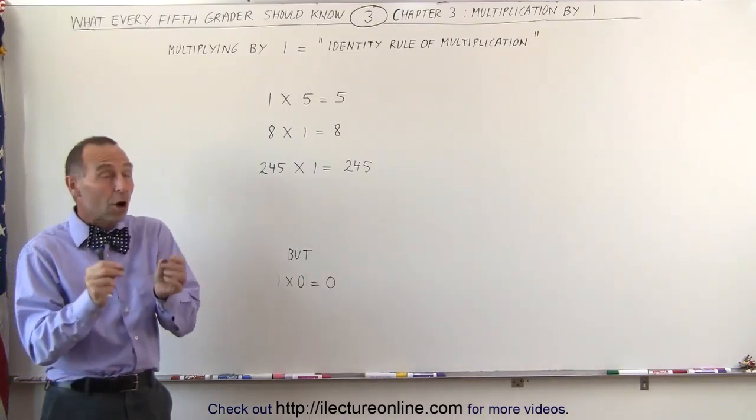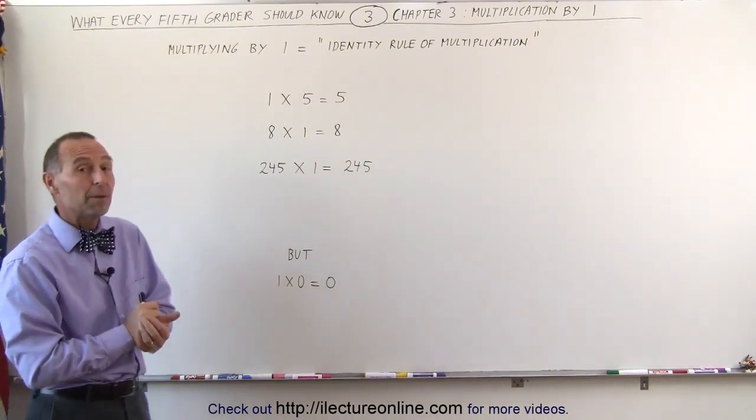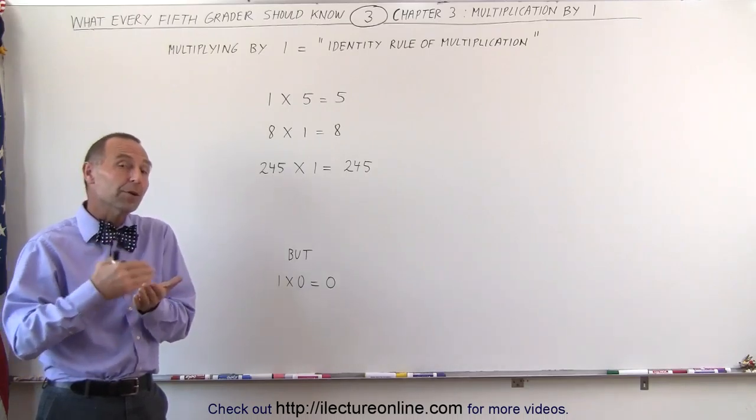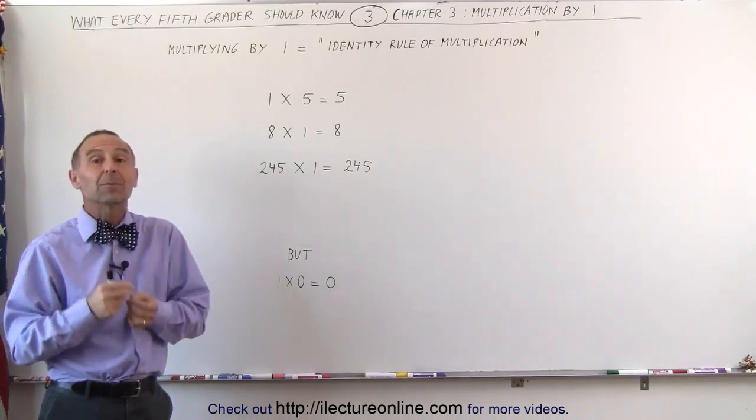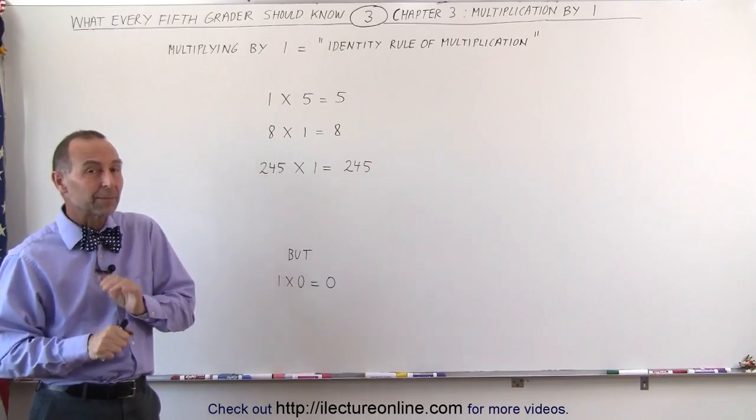In mathematics we call it the identity rule of multiplication, which means in simple words that when you multiply by 1, you get the same number again, whatever the number is you're multiplying by 1.